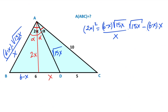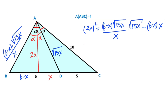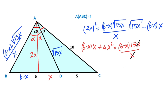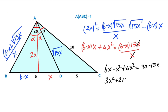Moving terms to the left-hand side of the equation: (6 − x)·x + 4x² = (6 − x)·15x/x. Expanding: 6x − x² + 4x² = 90 − 15x. Organizing: 3x² + 21x − 90 = 0.